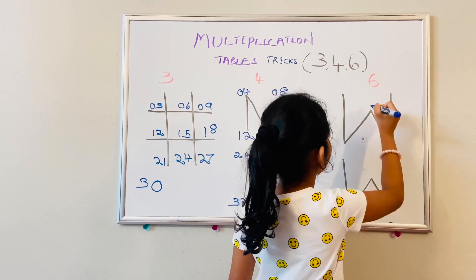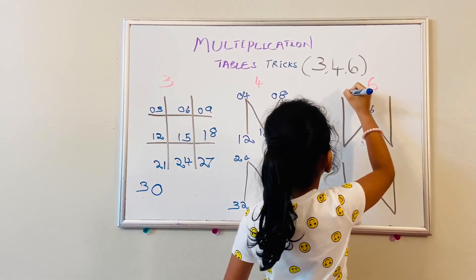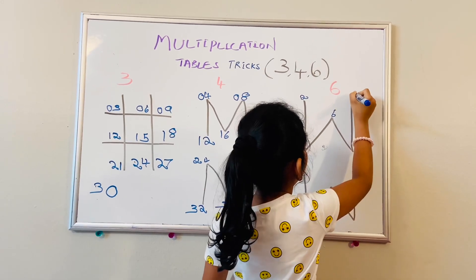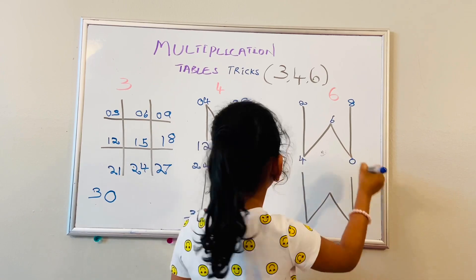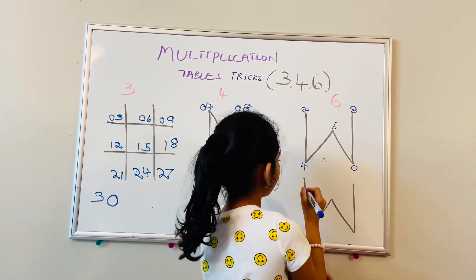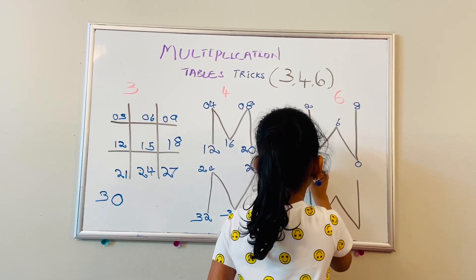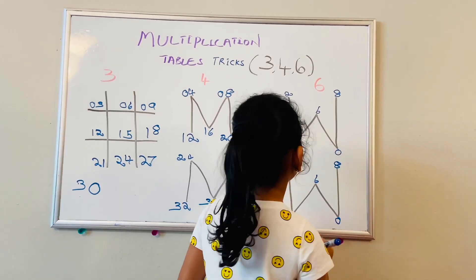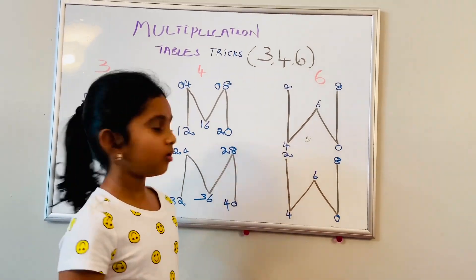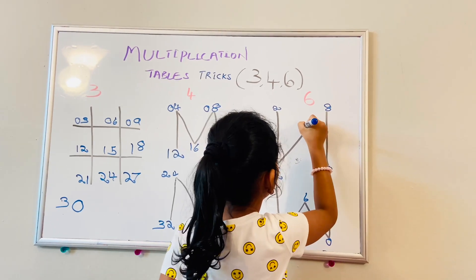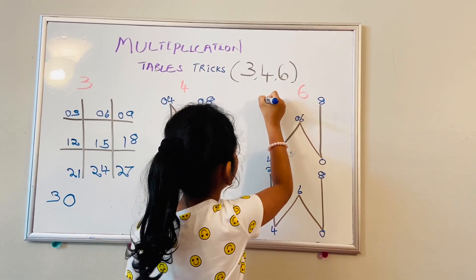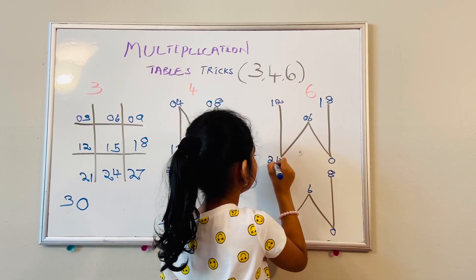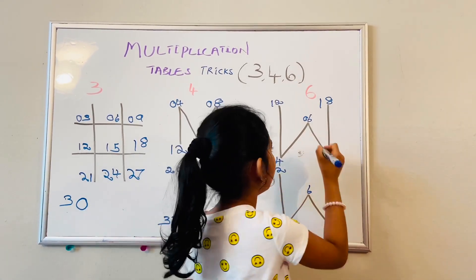Now let's do the sixth table. For the sixth table, write six, and then two, four, six, eight, zero — instead of ten, it's zero, just like the fourth table. Then write the same pattern. For the first row, put zero, then one, one, one, then two, two, two. Change the tens digit whenever it comes to the last of the pattern.